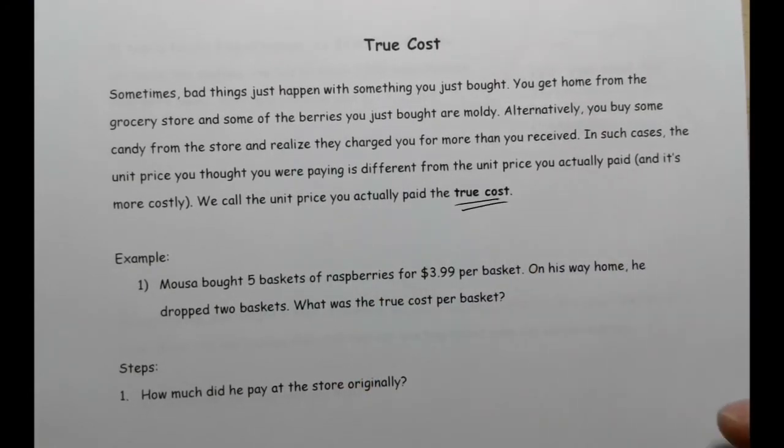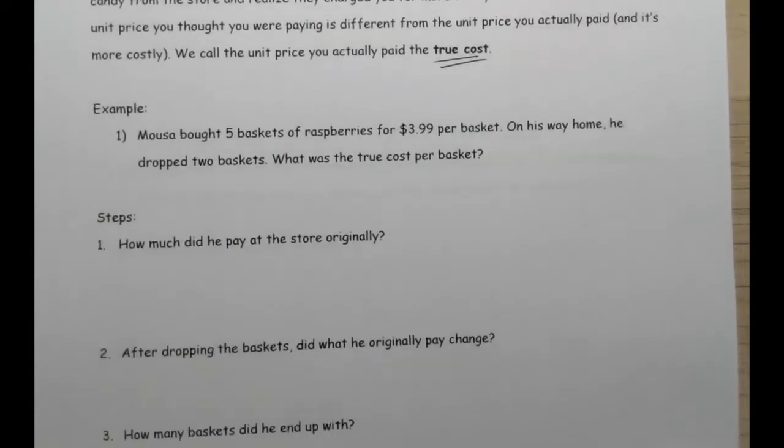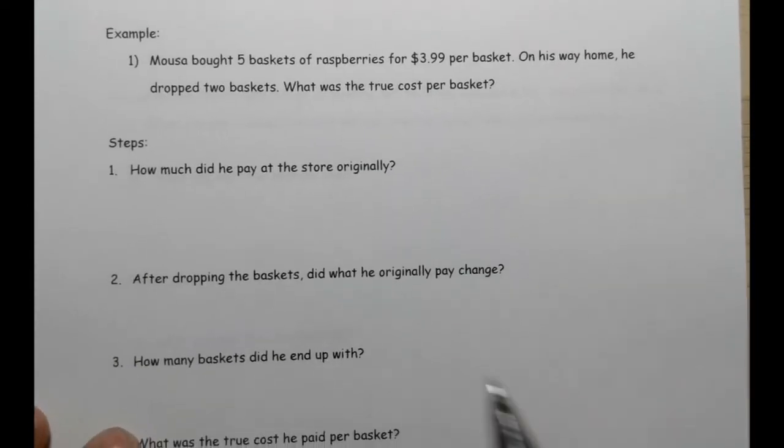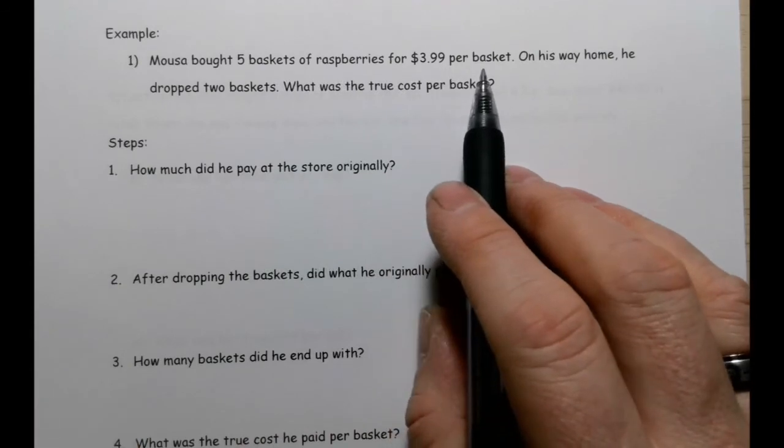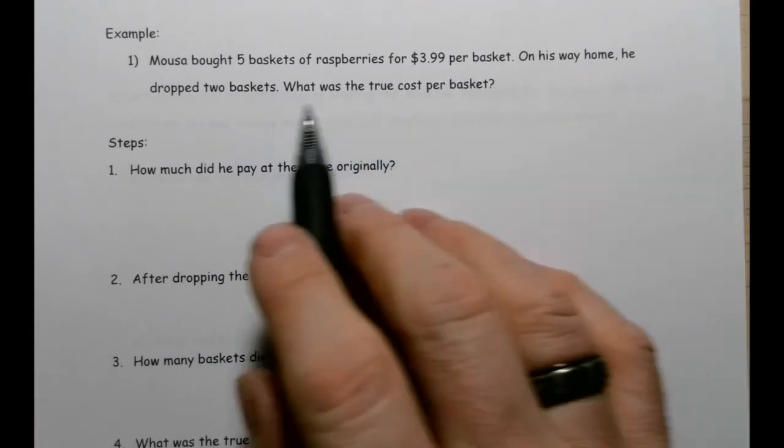It's typically more cost because what you got was less than what you thought you were getting. And so the unit price that you actually paid, that's called the true cost.